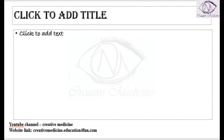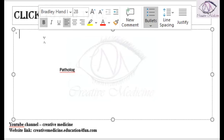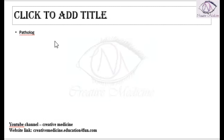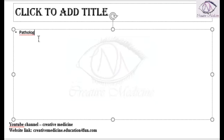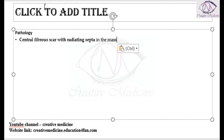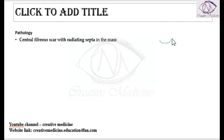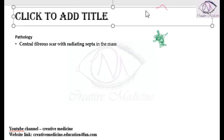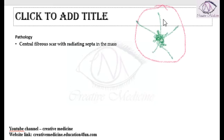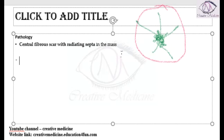In the pathology of focal nodular hyperplasia, the patient presents with a central fibrous scar along with radiating septa in the mass. There is a central fibrous scar, and radiating septa are seen extending from the central fibrous mass outward. This is seen on gross pathology.